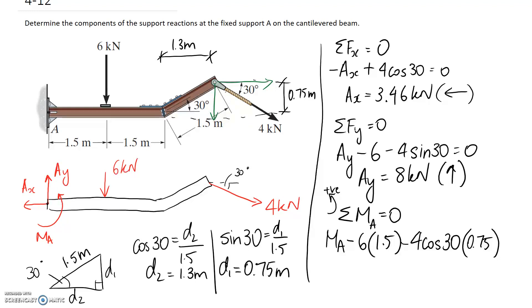We then consider the vertical component so that's going to be 4 sin 30 multiplied by the distance back to point A so it's going to be the total of 1.5 plus 1.5 plus this extra 1.3 so that's the same as 4.3 metres. It's going to try and cause a clockwise rotation about A so it's going to be negative.